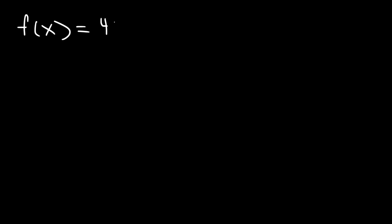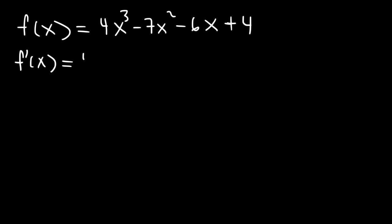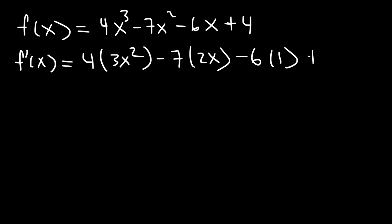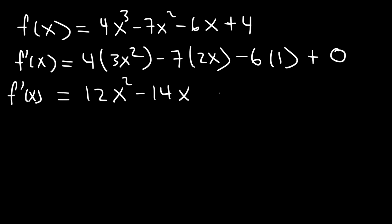Following the same procedure for a second example, we find the first derivative and set it equal to zero. The derivative of x cubed is 3x squared, of x squared is 2x, of x is 1, and of any constant is zero. So f prime of x equals 12x squared minus 14x minus 6. Setting this equal to zero.